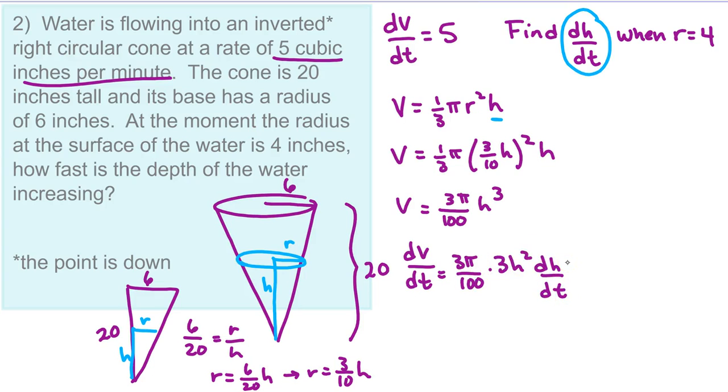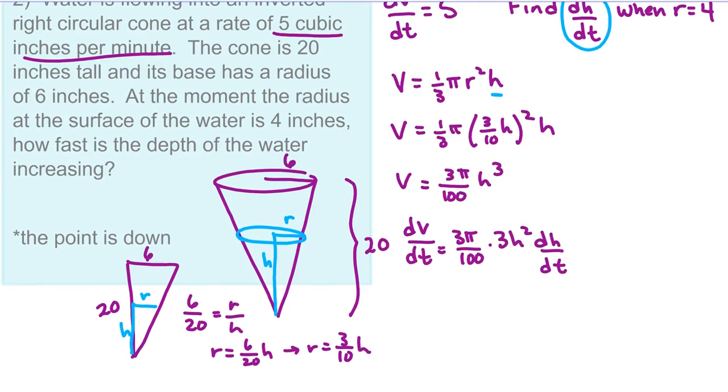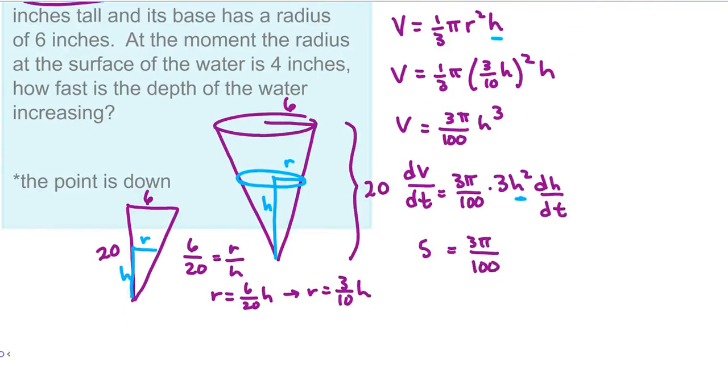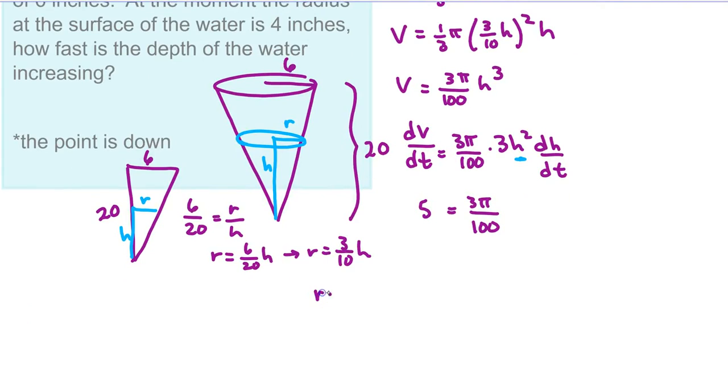And now let's substitute in our numbers. Well, we know dv dt is 5, so we can substitute that in, but we don't know h. We do know r is 4. So what we're going to do is find the value of h when r is 4. So remember back over here, r equals 3 tenths times h. Well, if r is 4, multiply by 10, divide by 3, h is 40 thirds.